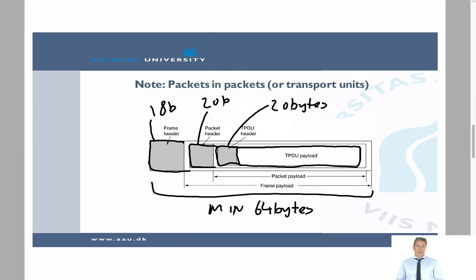If we are using UDP, the header of the transport layer is only 8 bytes. So what you see here is that we have a frame, and inside this frame we have the IP packet, and inside this IP packet we have the TCP packet or the UDP packet. To repeat: the header length would be 18 bytes for Ethernet, 20 bytes for IP, and 20 bytes for TCP — or 8 bytes if we are using UDP. And it's important to remember that for an Ethernet frame, the frame length would be at least 64 bytes.